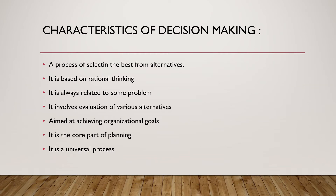The characteristics of decision making are: first, it is a process of selecting the best from the given alternatives. It is based upon rational thinking — rational thinking means you have to judge the various pros and cons of all the alternatives available. It is always based on some problem. It involves the evaluation of various alternatives, aims at achieving organizational goals, is the main part of planning, and is a universal process applied at every level of an organization.